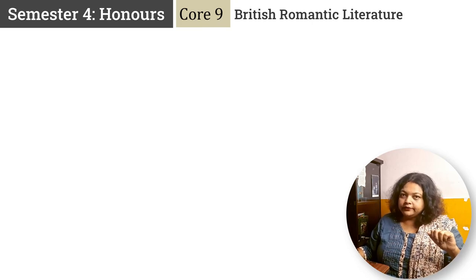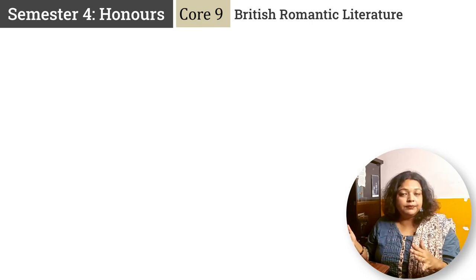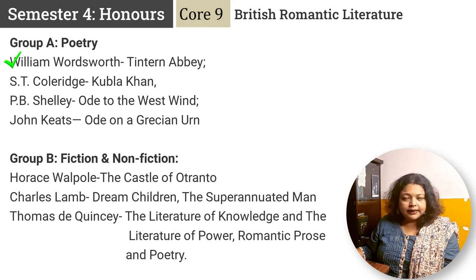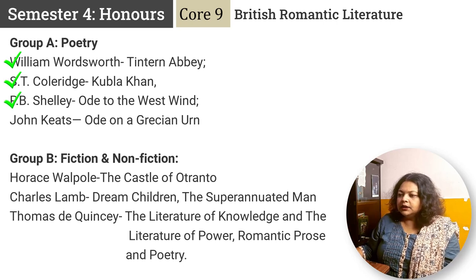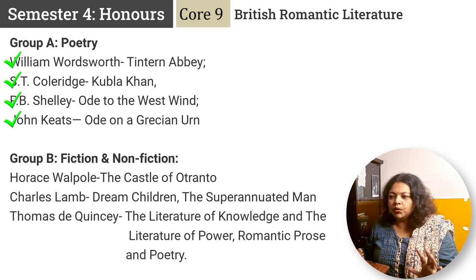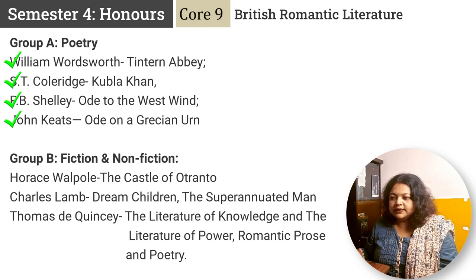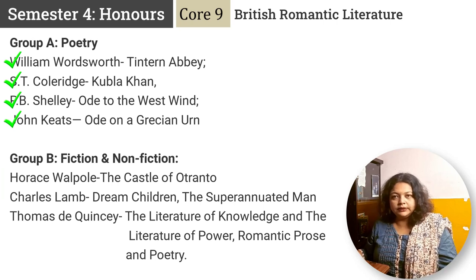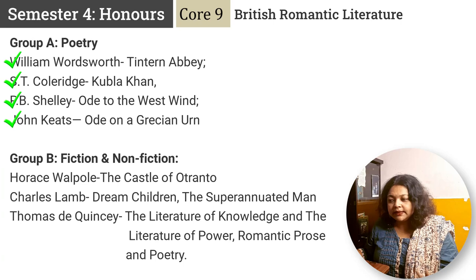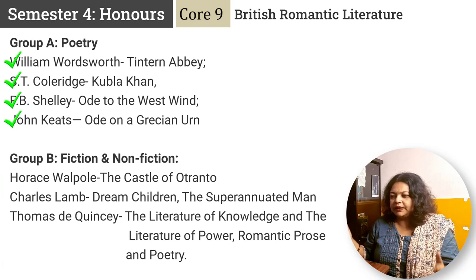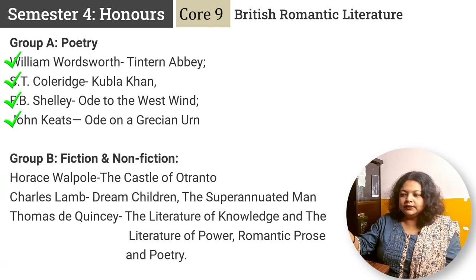Core 9 is British Romantic Literature, with some major changes. Group A poems: Wordsworth's Tintern Abbey, Coleridge's Kubla Khan, Shelley's Ode to the West Wind, and Keats' Ode on a Grecian Urn. Group B fiction and non-fiction: Horace Walpole's The Castle of Otranto, Charles Lamb's essays Dream Children and The Superannuated Man, and De Quincey's essay The Literature of Knowledge and The Literature of Power — this De Quincey section is a new addition.